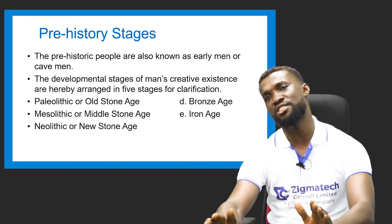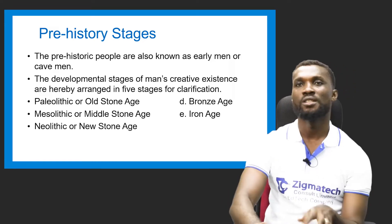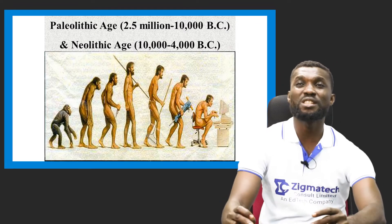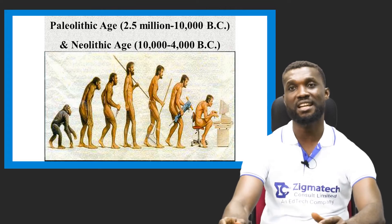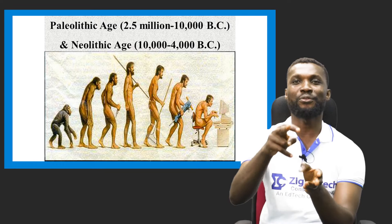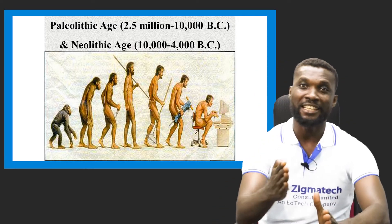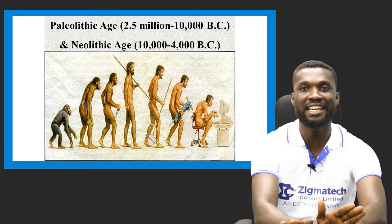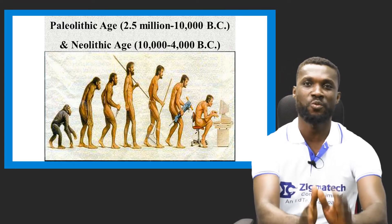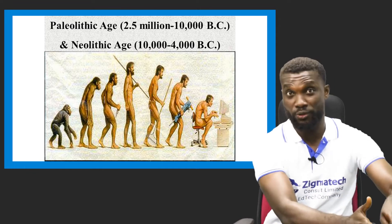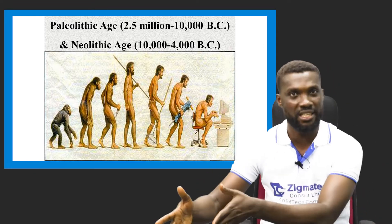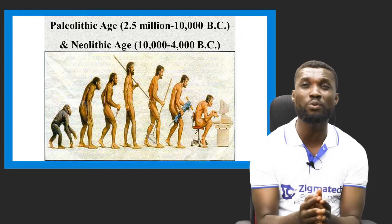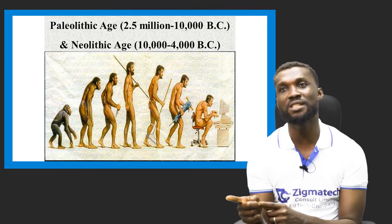Now let's look at the Paleolithic period. It begins from 2.5 million to 10,000 BC — that is Before Christ. Looking at the image, the first figure represents the Paleolithic age, when men were totally naked. There is a school of thought that believes men then were like apes, while other schools believe we came from Adam — the Christian perspective. Whatever you believe, we know there was a period known as the Paleolithic period, existing between 2.5 million years ago and 10,000 BC.